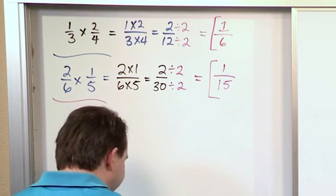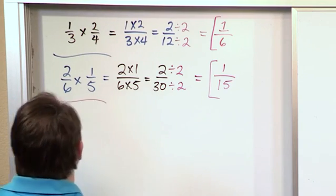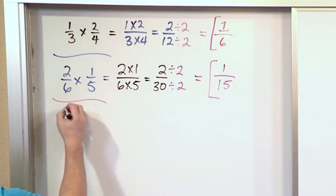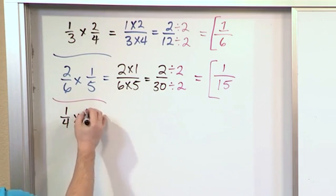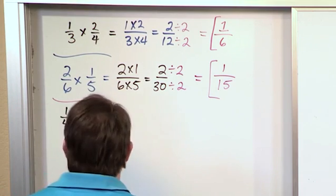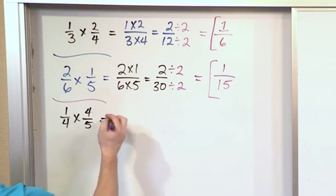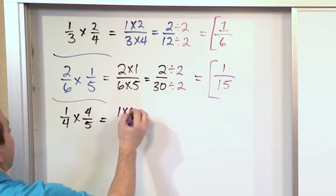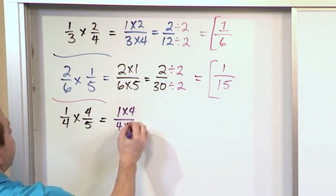So in all of these problems, we are going to end up needing to simplify the results. What if we have 1/4 times 4/5? And again, we try to multiply the tops and multiply the bottoms. And so 1 times 4 on the top,